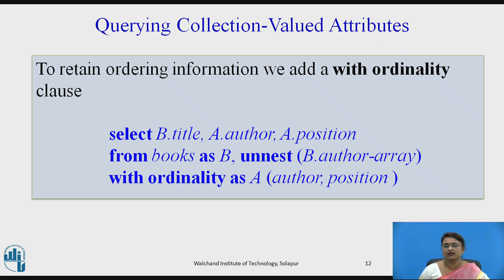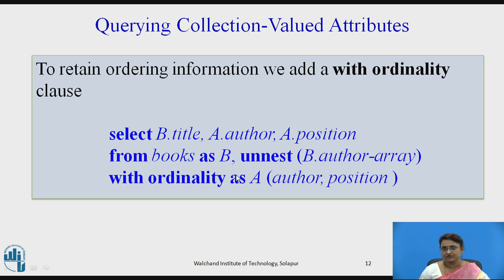If we also want the position — first author, second author, etc. — we use WITH ORDINALITY. The query is: SELECT b.title, author, position FROM books AS b, UNNEST(author_array) WITH ORDINALITY AS (author, position). This displays the book name, author name, and position (first, second, third author) for every entry.